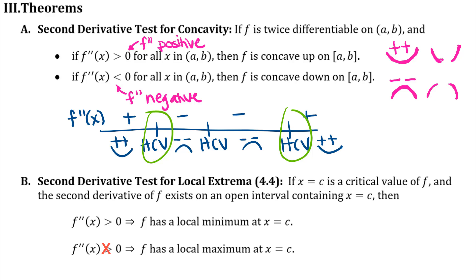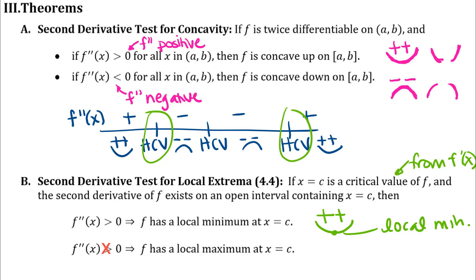This second theorem we won't use much today but will use later in application problems. It connects critical values to local extrema using concavity. If you know you have a critical point from the first derivative, and you examine the concavity at that critical point, you can visualize the happy or sad face. If the second derivative is positive at that critical point, the function is concave up and the critical point is a local minimum. If the second derivative is negative — note there's another typo in the slides — then the function is concave down and you have a local maximum.